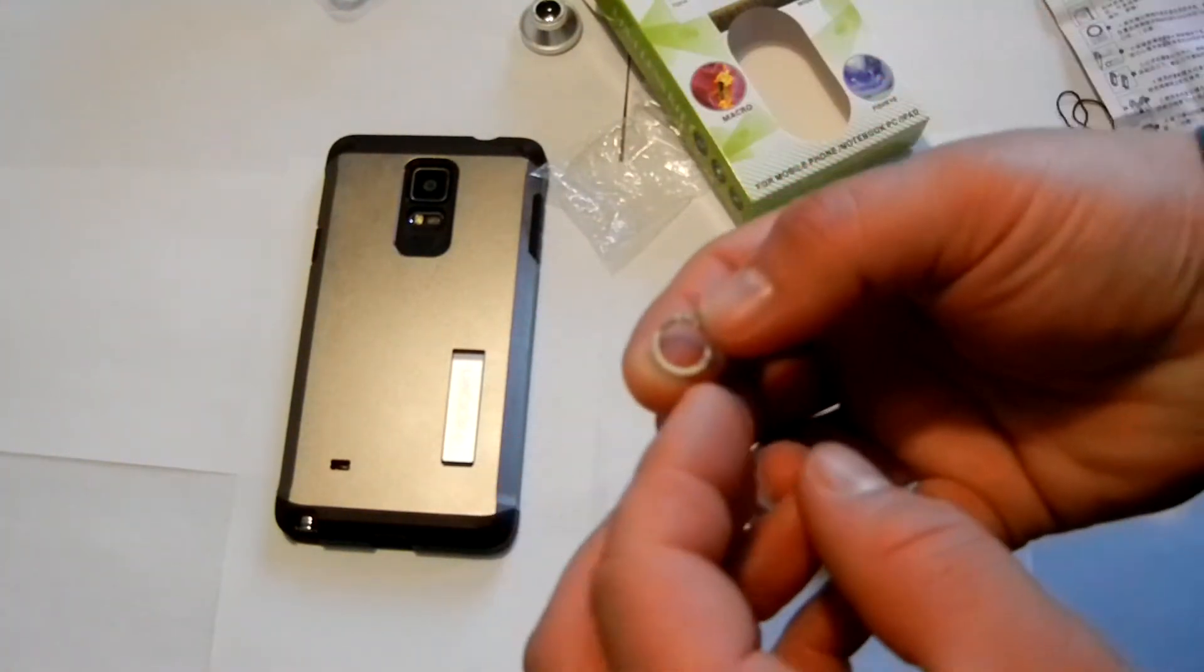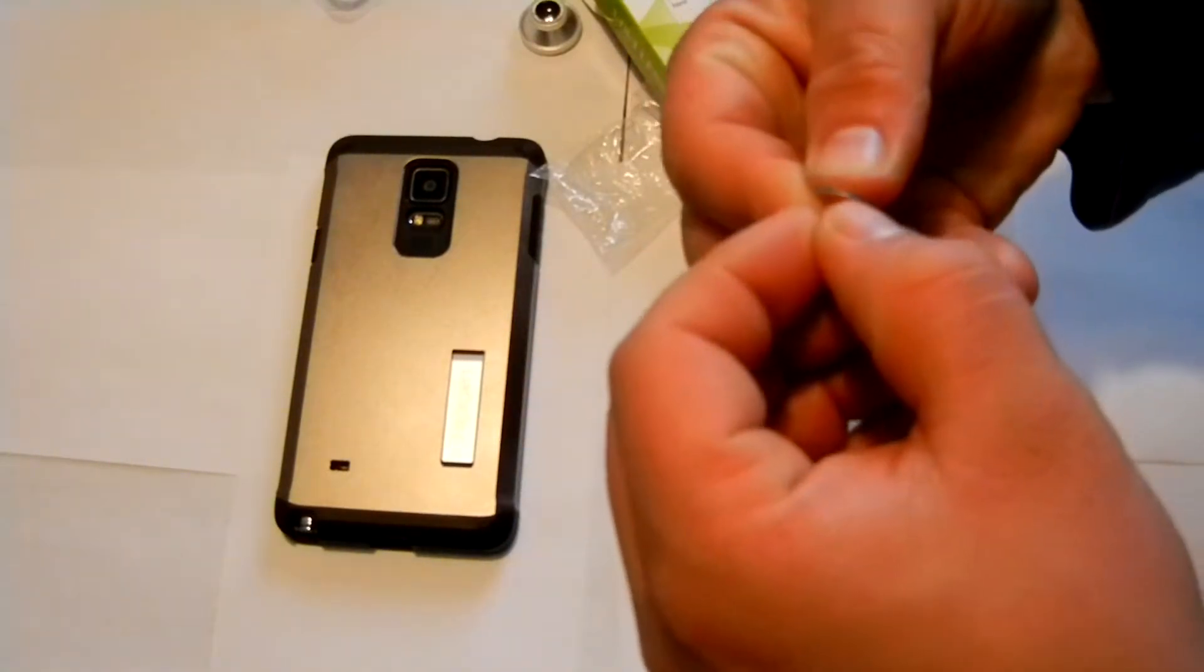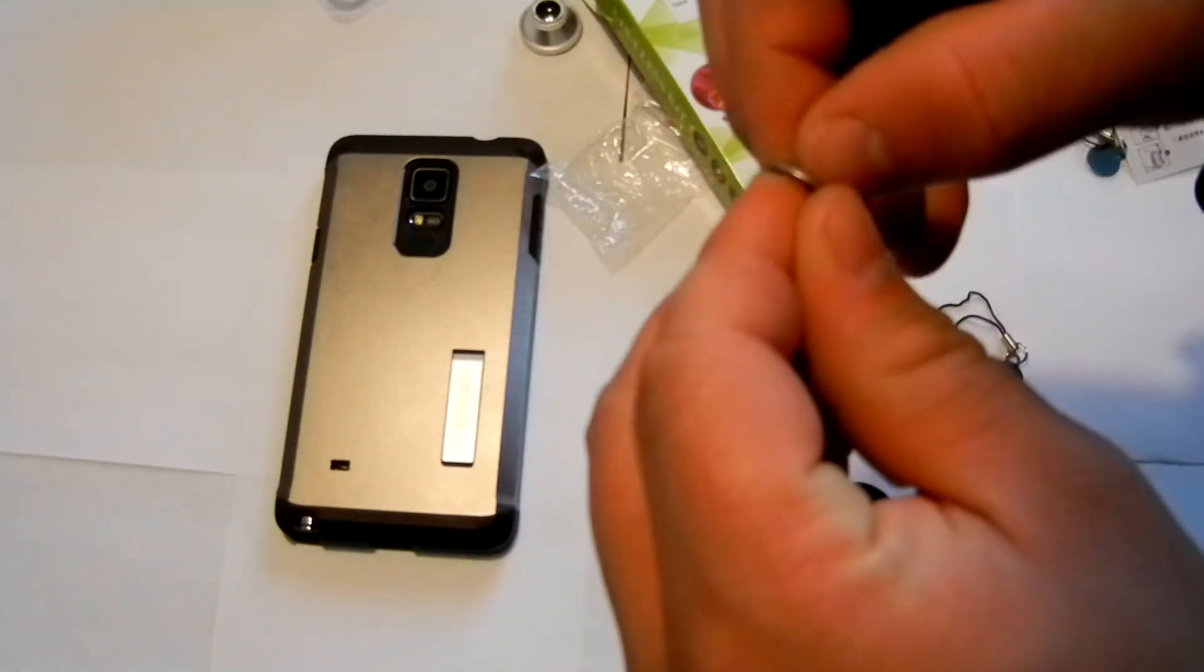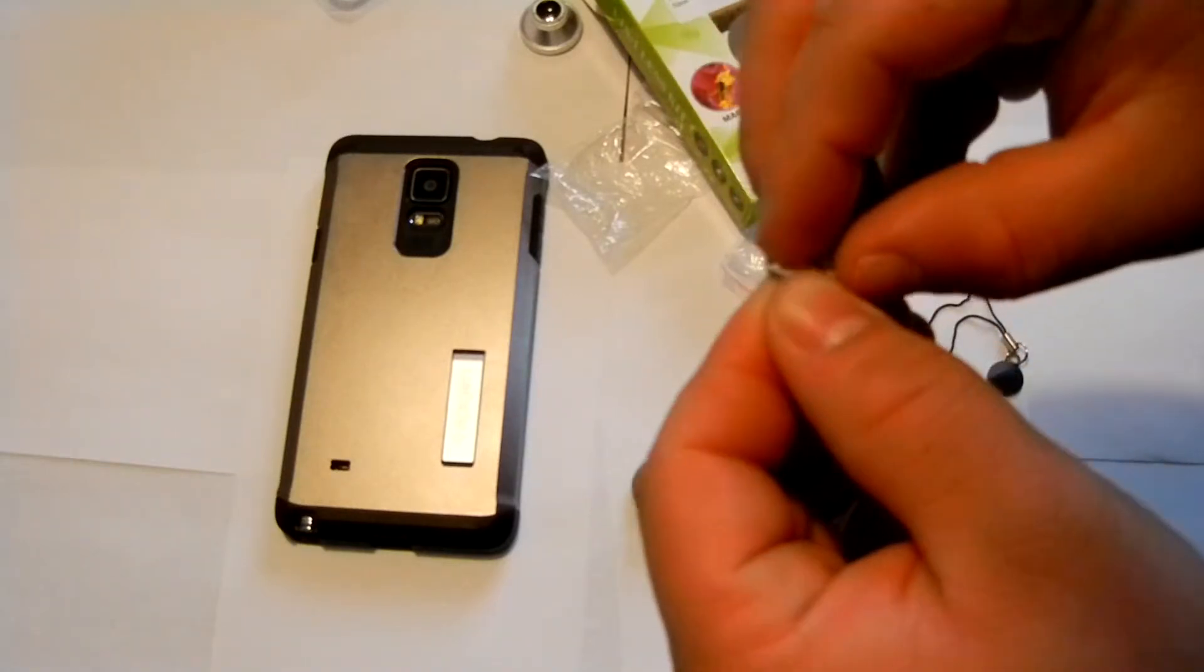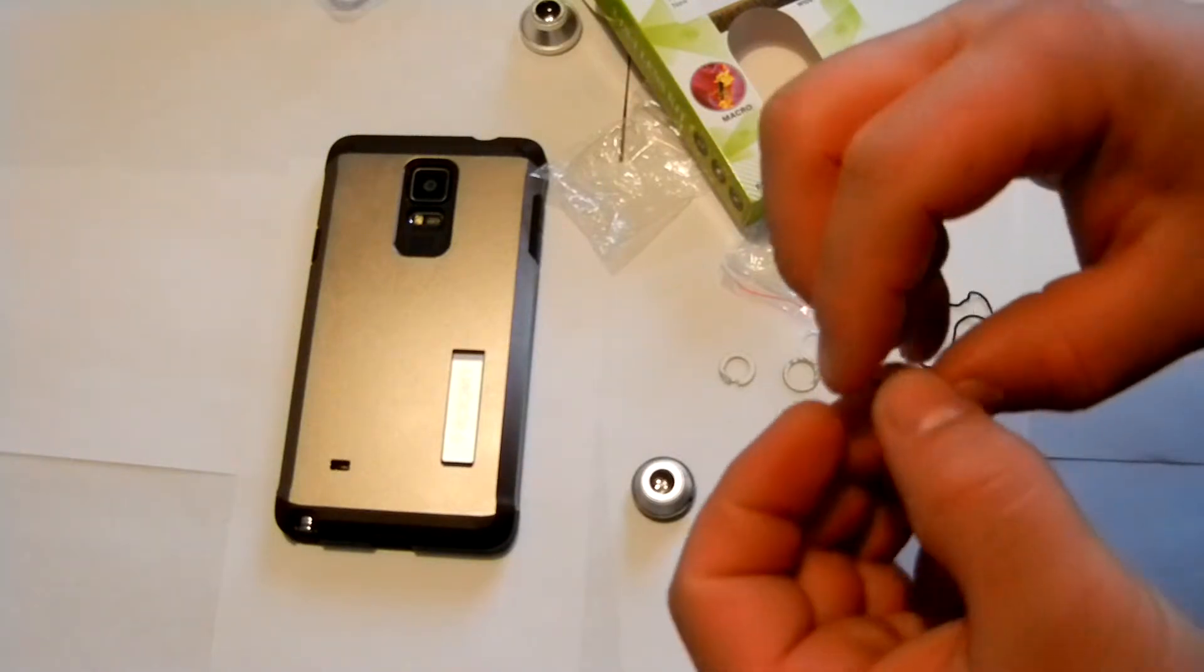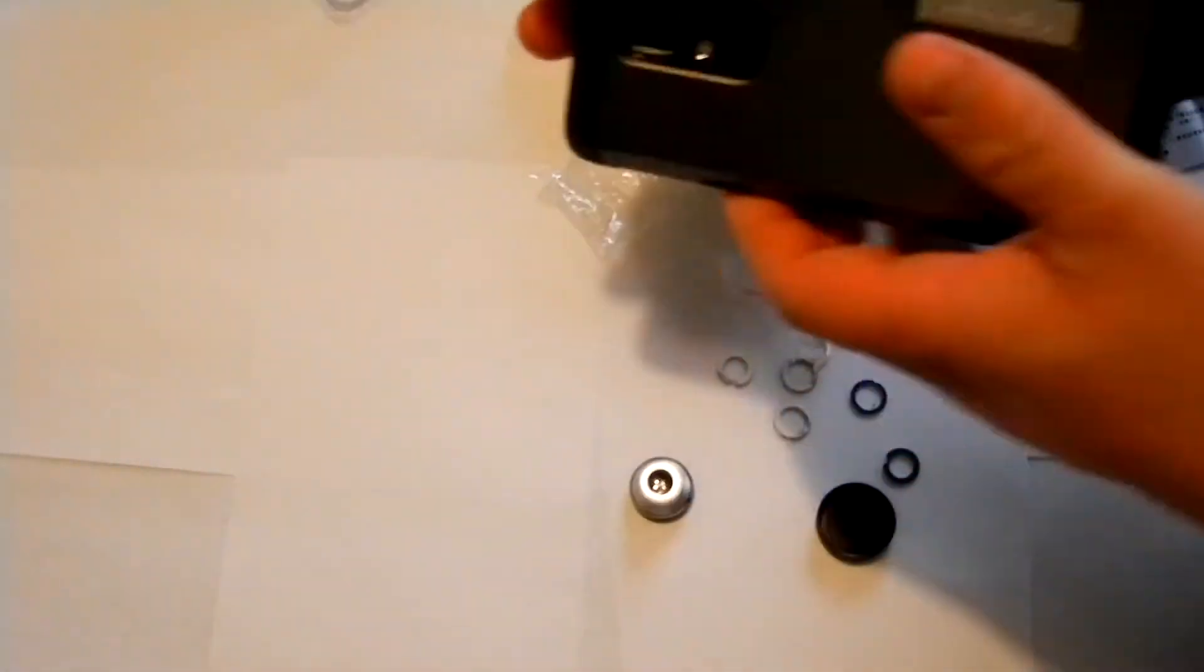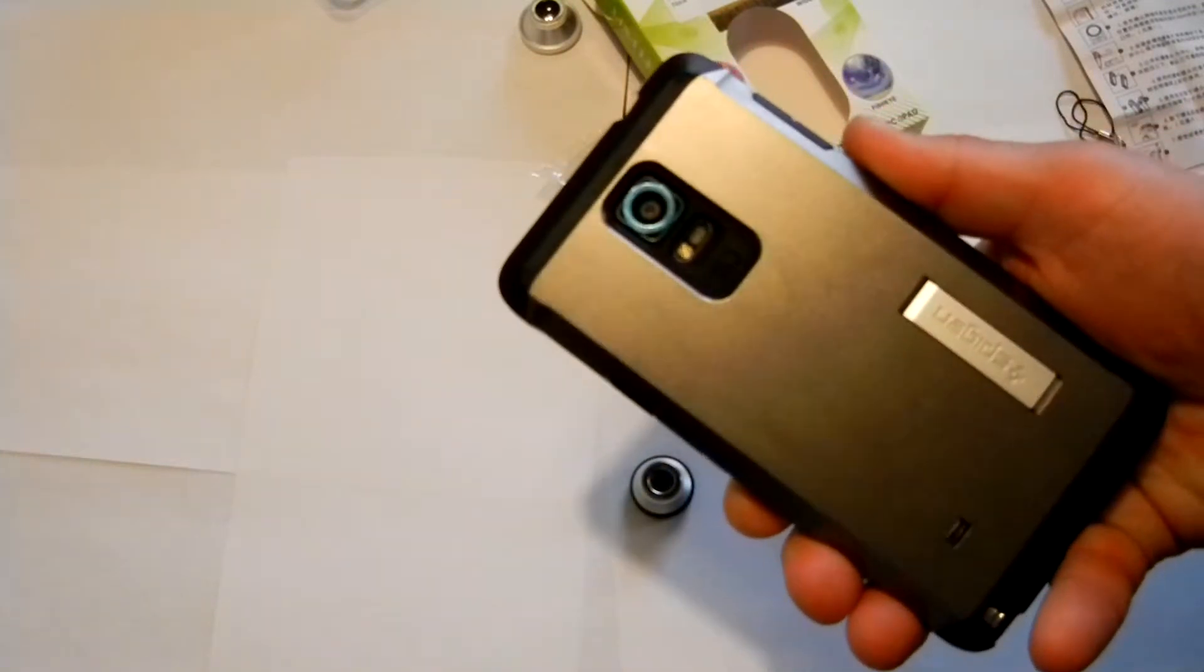You've got a little sticky back right here that you just peel off. Okay, now once the ring, once the back has been peeled off, what you do is you set it on there the best that you possibly can. Try to center it as best as possible.